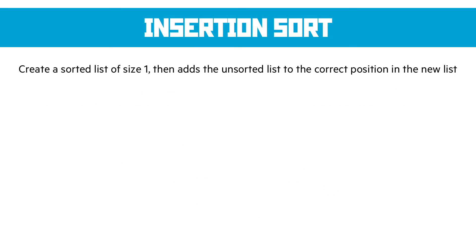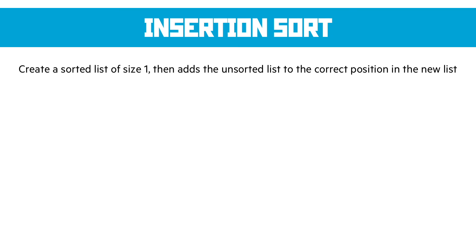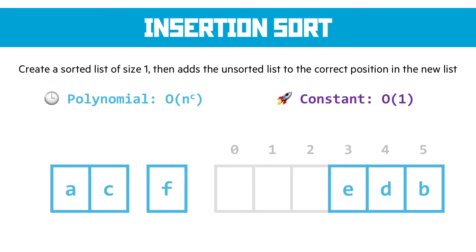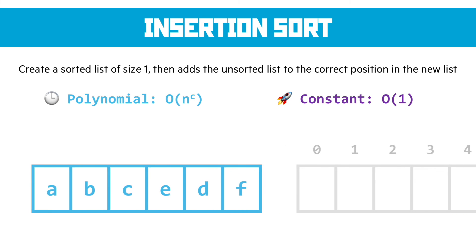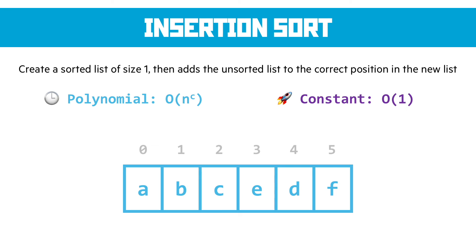Insertion sort creates a list of size 1 — which is sorted by nature — then adds items from the unsorted list into the correct positions within the new list. It has polynomial time complexity because we go through the list multiple times, and constant space complexity. In the example, we pop off the first item as our sorted list, then go through the remaining items placing each in the correct position: A goes there, F goes to the right of C, then slot in E, D, B. The insertion itself could use a simple linear search for the position.